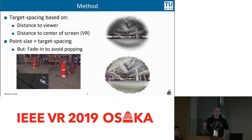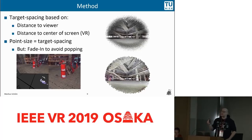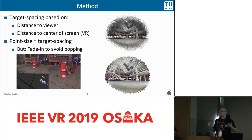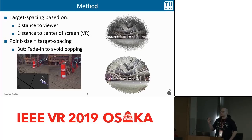If we do it like that, we can end up with another problem: as we move towards a region, additional points are added at a certain size — immediately added with a size of five pixels, 10 pixels, or at very low quality, 20 pixels. This is again very noticeable — you have points popping in at a certain size.